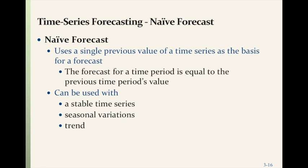The naive forecast uses a single previous point of a time series as the basis for the forecast. Whatever happened today, we use the same value for tomorrow; or whatever we got this week, we use for next week. At the end of the time period, you add it up and forecast that the future is the same as today. This can be used with stable time series, seasonal variations, and trends.